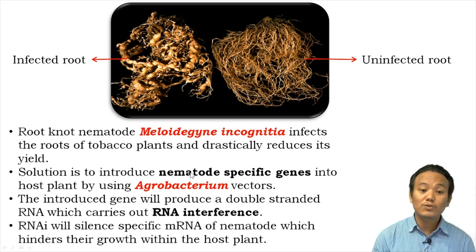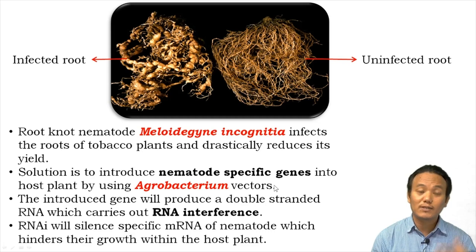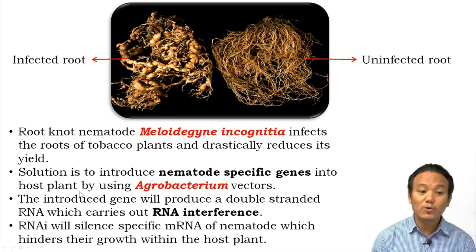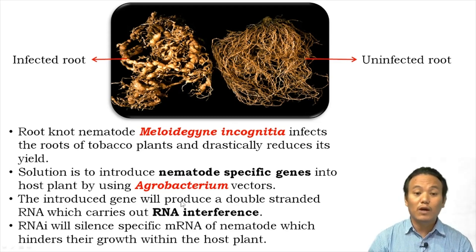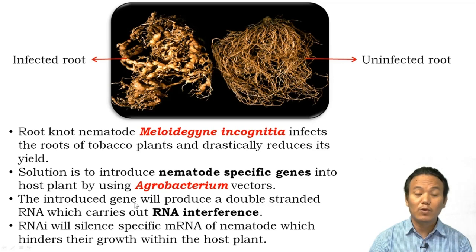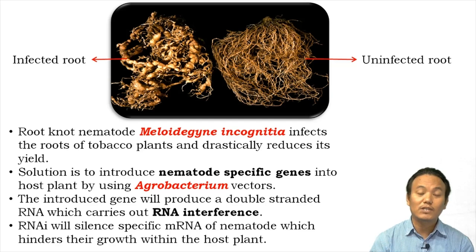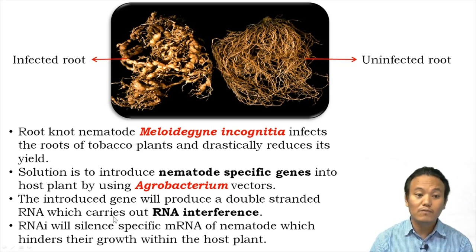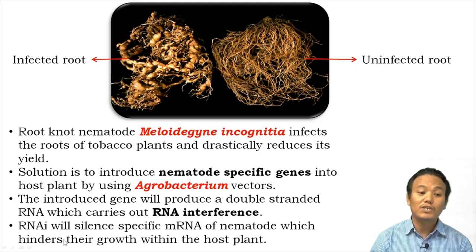The solution is to introduce nematode-specific genes into the host plant using Agrobacterium vectors — the plasmids of Agrobacterium tumefaciens used as vectors to introduce foreign genes into the host plant. The introduced gene within the host plant starts producing a double-stranded RNA molecule that carries out the RNA interference process. This double-stranded RNA is complementary to the nematode's mRNA and binds to it, preventing translation into protein. The RNA interference process silences a specific mRNA of the nematode parasite, hindering its growth within the host plant and thereby making the host plant resistant to the nematode.